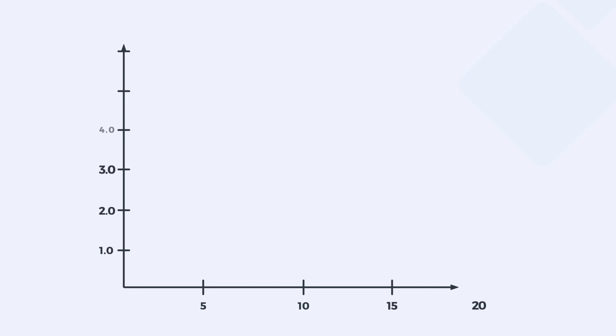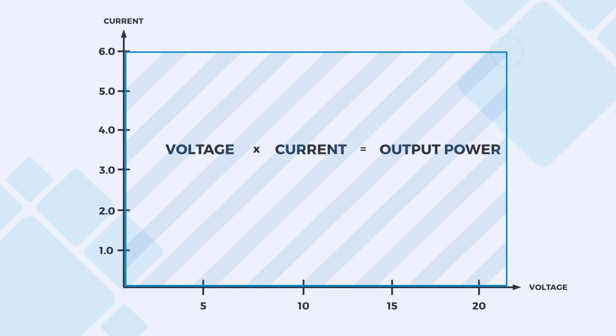See this example. The x-axis is voltage and on the y-axis is current. Voltage multiplied by current gives us output power. In a solar application, we want output power to be as high as possible.